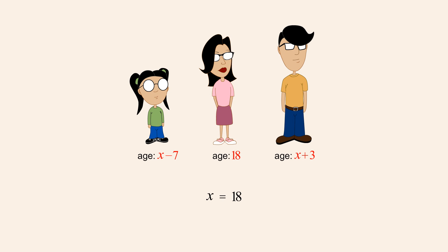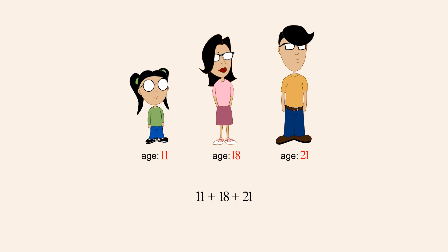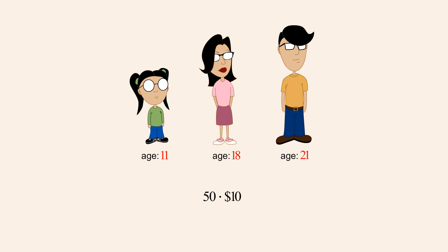Substituting this value for x into the expressions for Adrian's brother and sister's ages, we see that her big brother is twenty-one and her little sister is eleven. We can check to see if these results are reasonable by adding all three ages. Since the sum of their ages is fifty and their uncle gave them ten dollars for each year of their age, then the gifts would have indeed totaled five hundred dollars.